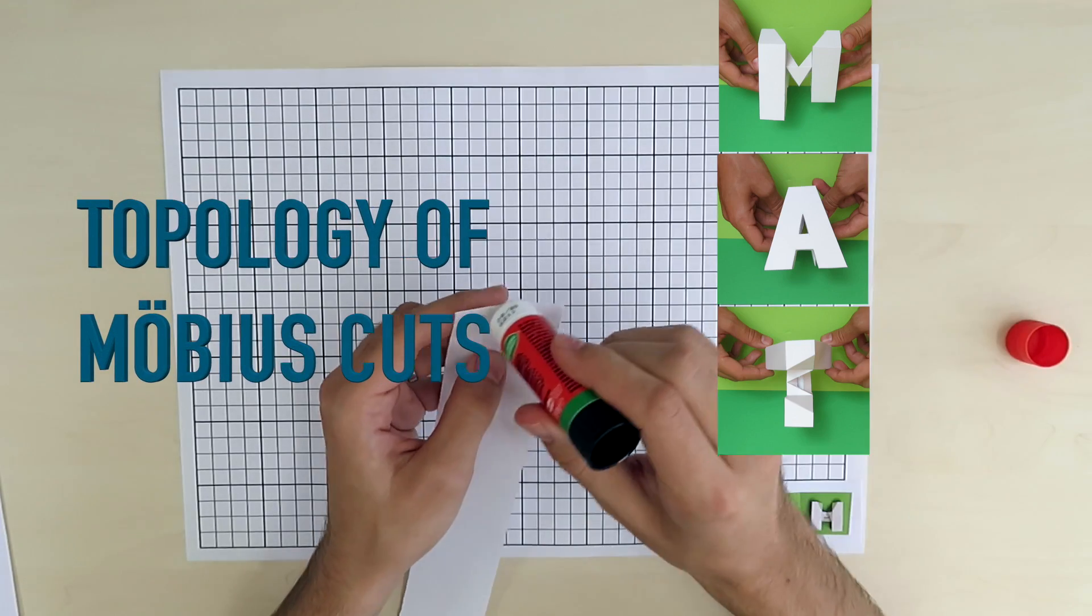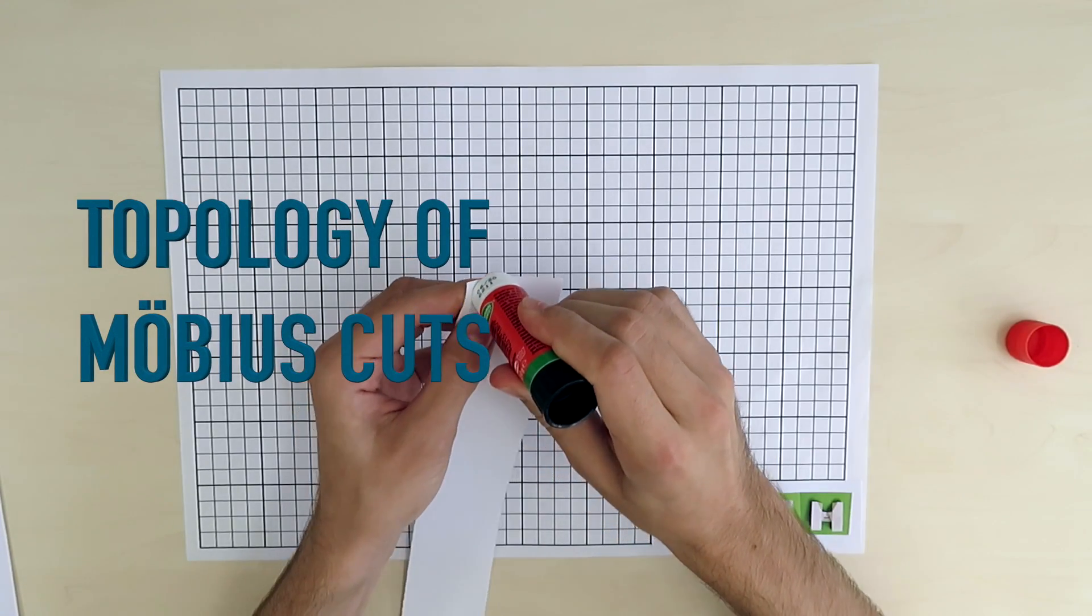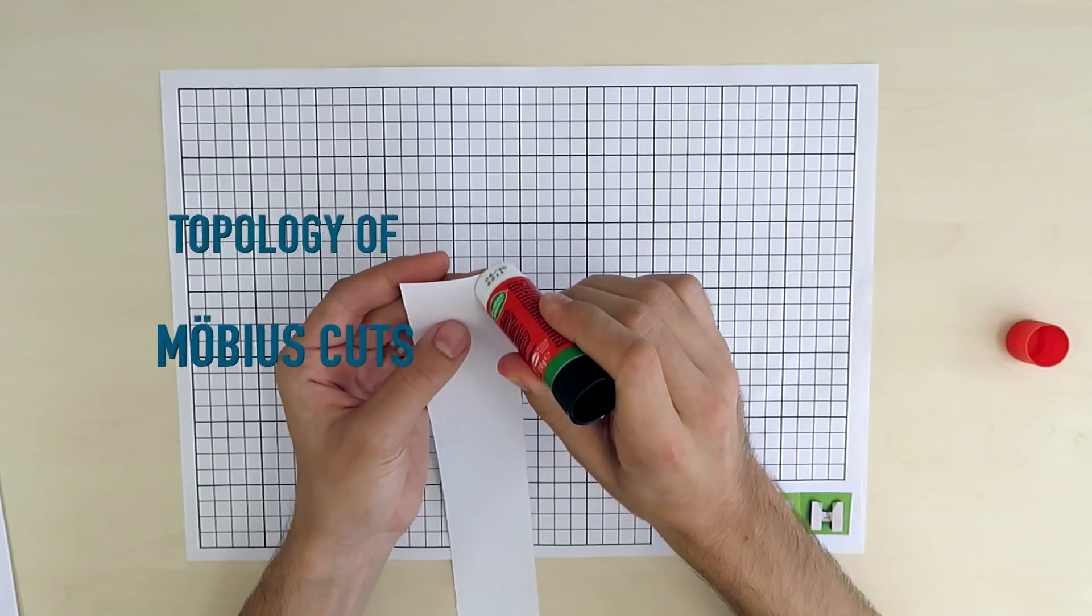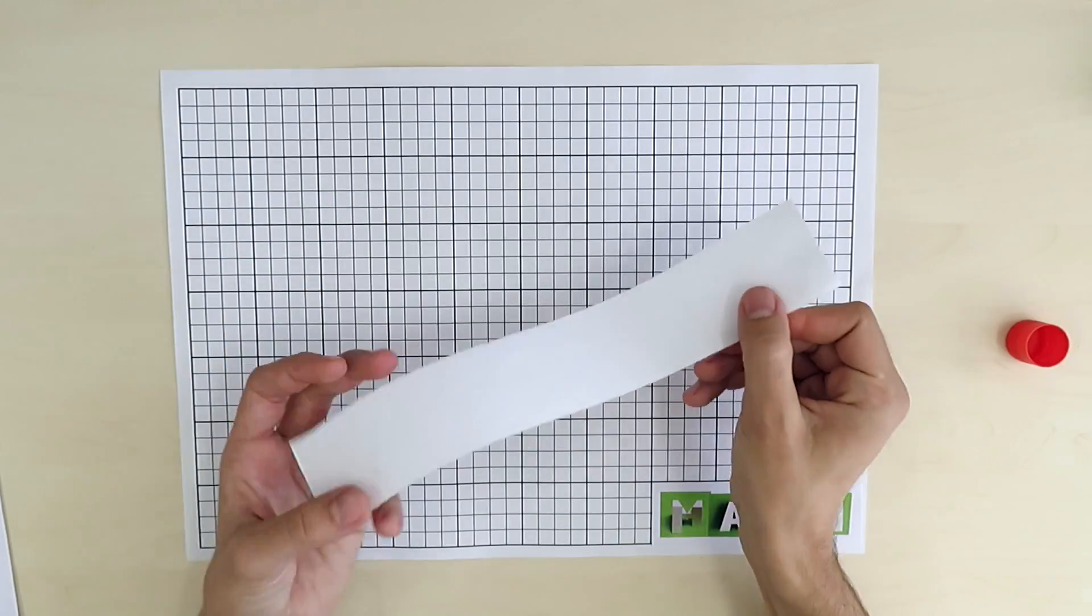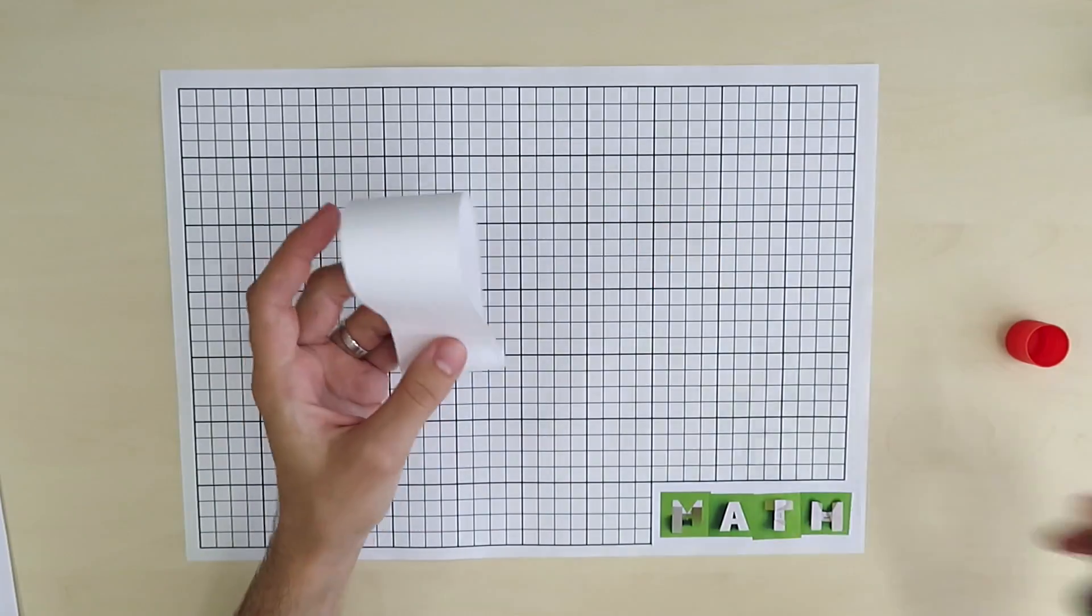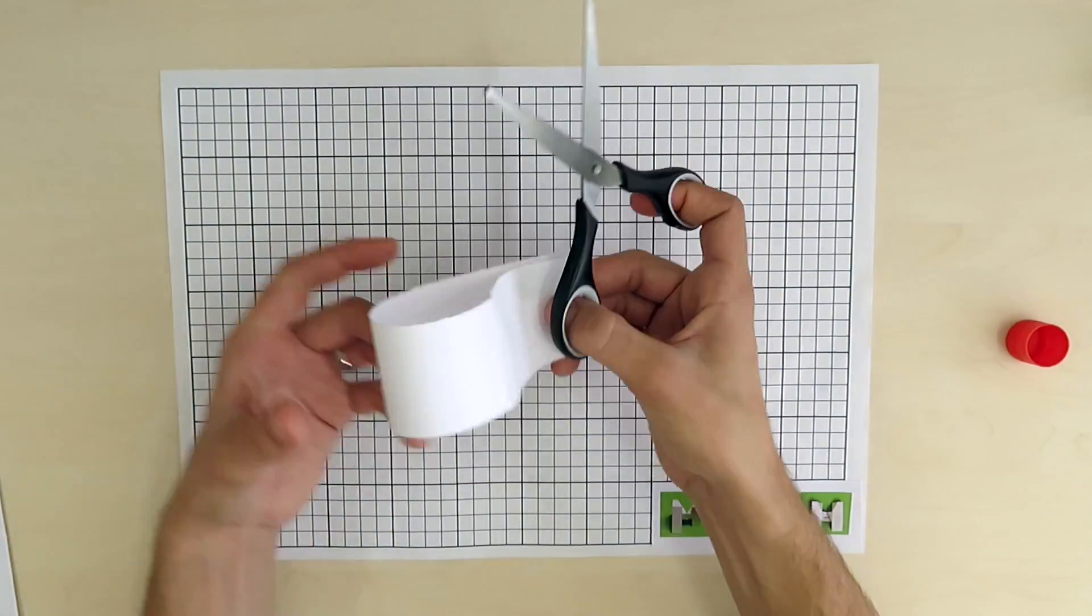Hello, in this video I want to show you math that describes well-known properties of Möbius strip and its cuts. We will also see simple but powerful math model with specific capabilities and limits.